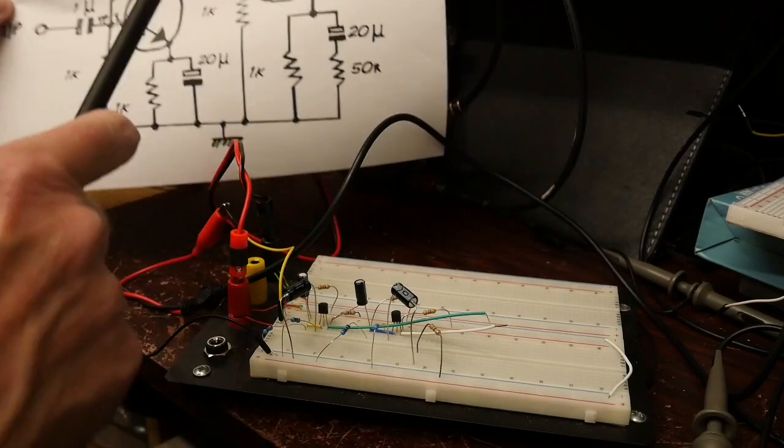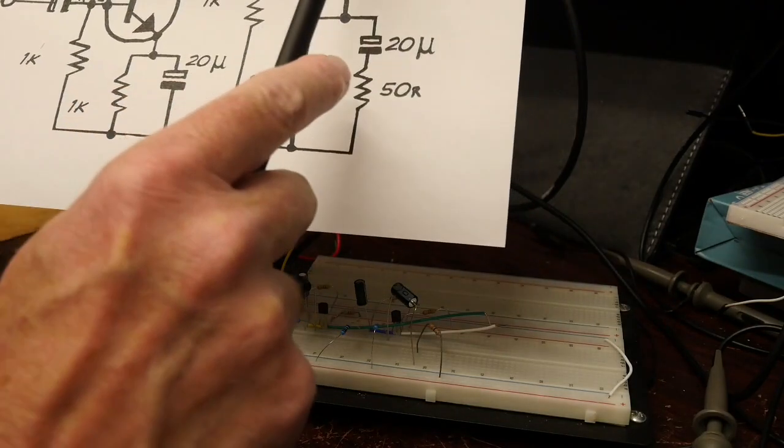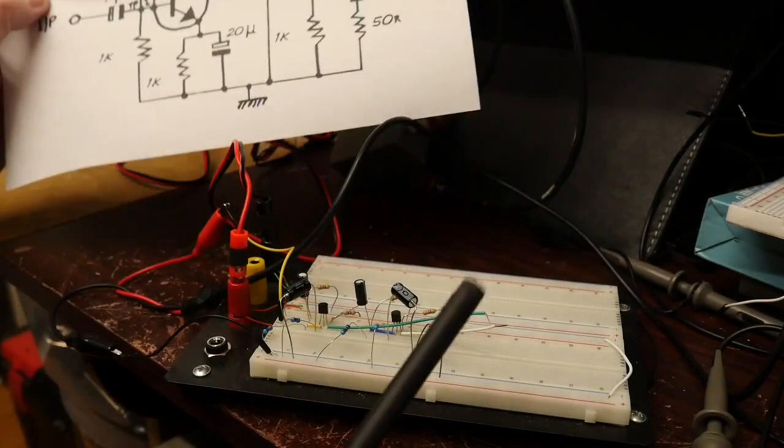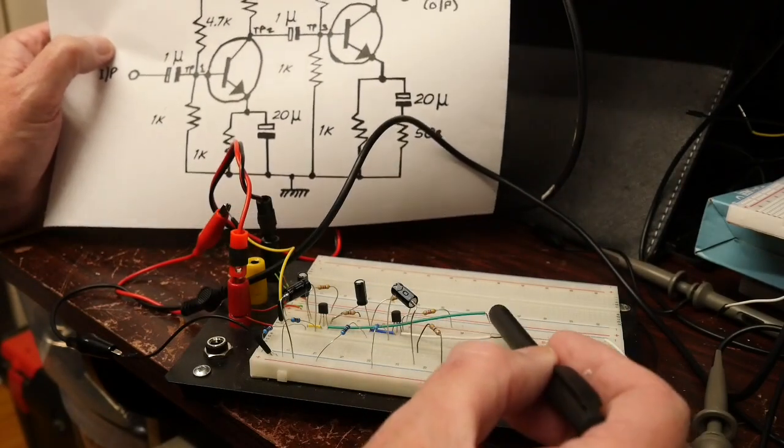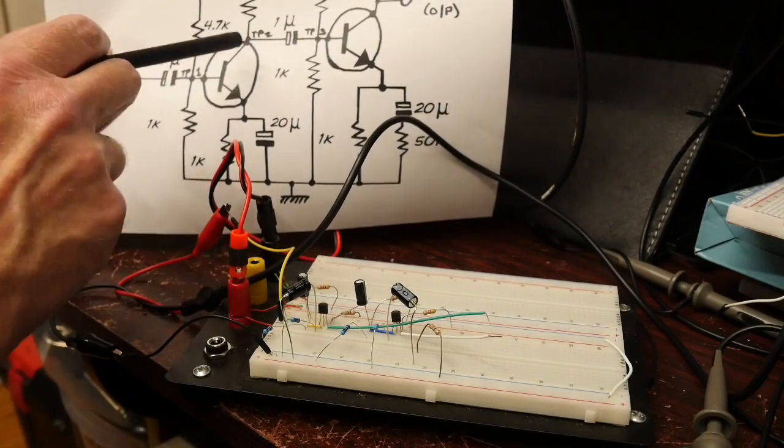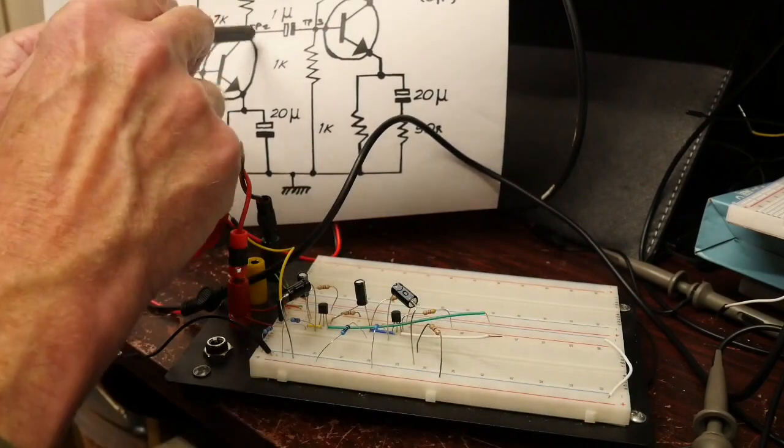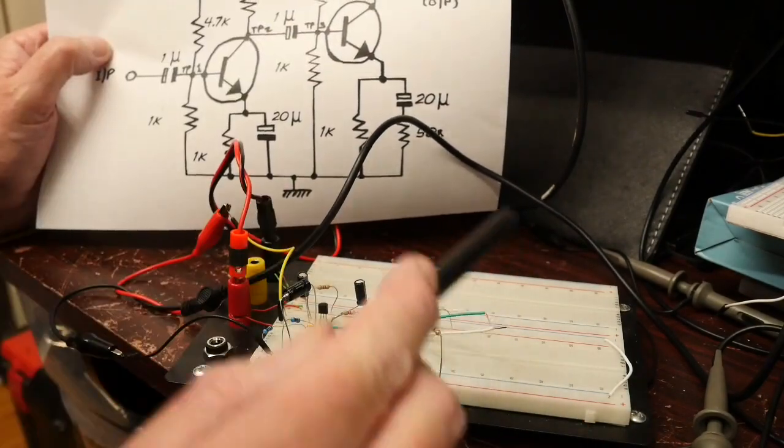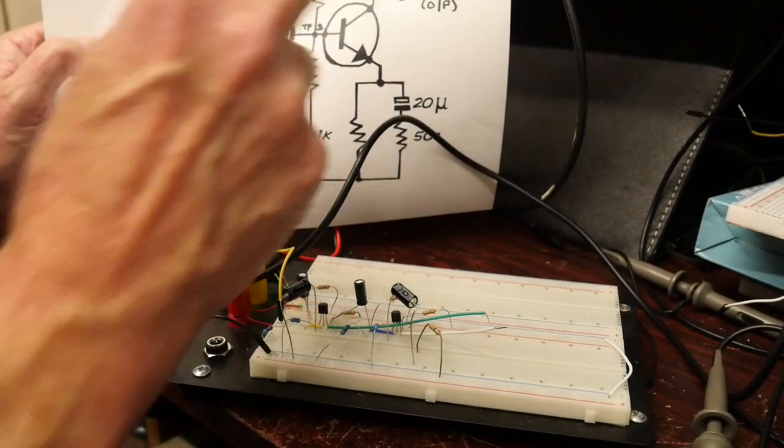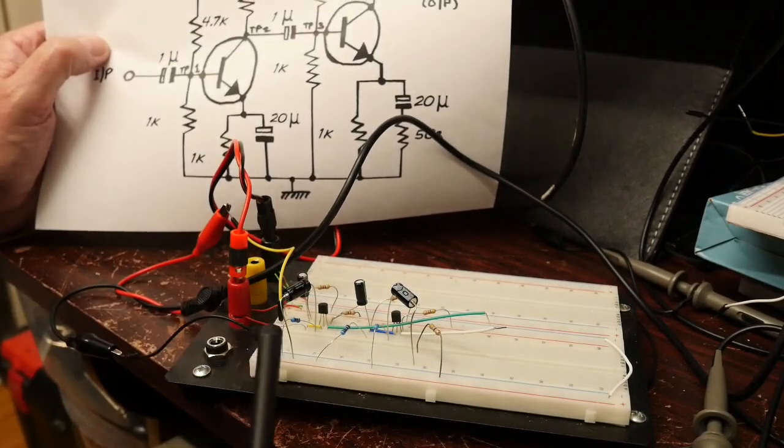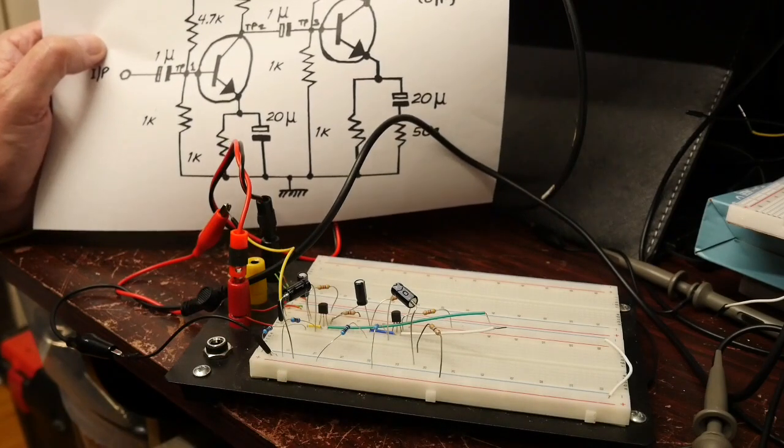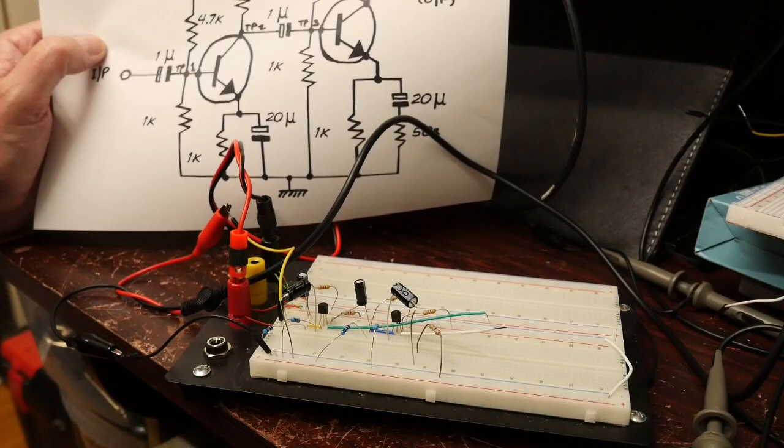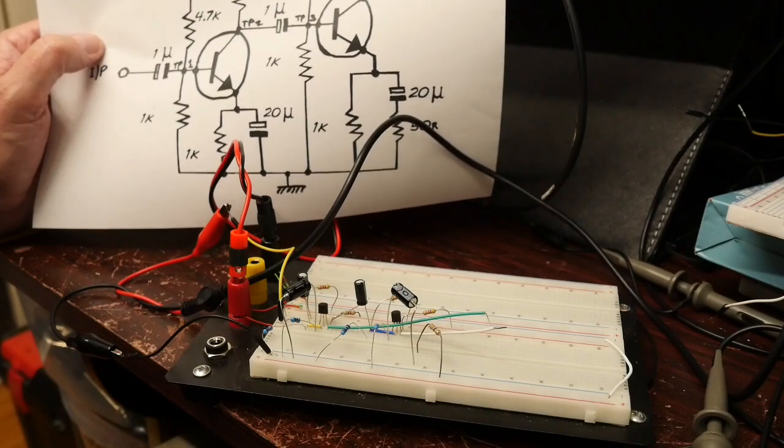What I've done for test points two and four, which I'm actually going to put the scope on, I've taken these out on these two wires here. So the green wire is an extension of test point two there, and the white wire is actually test point four, or the output. I think the rest of the circuit is hopefully self-explanatory. So let's get set up with the meter and then take some measurements.